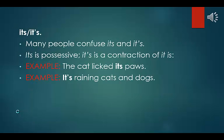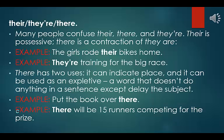It's vs. its: many people confuse it's and its. Its is possessive; it's is a contraction of 'it is.' Example: the cat licked its paws. Example: it's raining cats and dogs. There vs. their vs. they're: their is possessive; they're is a contraction of 'they are.' Example: the girls rode their bikes home. Example: they're training for the big race. There has two uses — it can indicate place and it can be used as an expletive. Example: put the book over there. Example: there will be 15 runners competing for the prize.